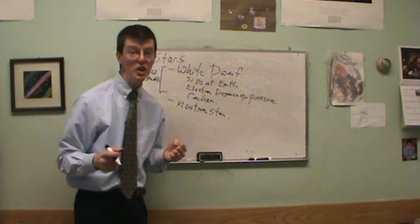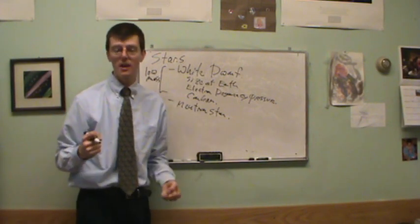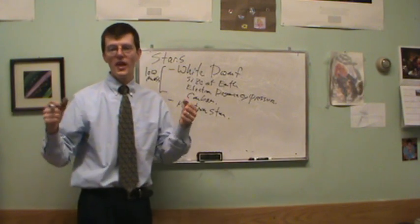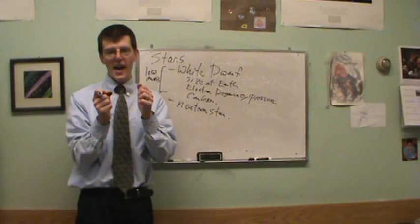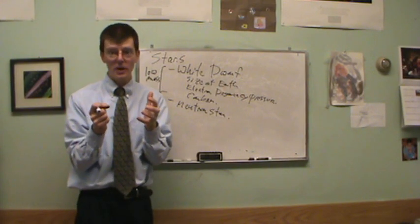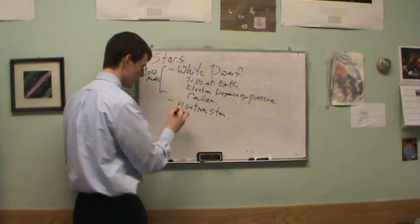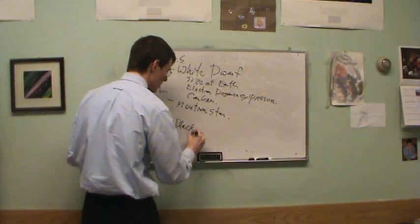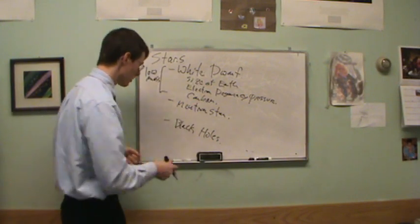If you're a really massive star, the biggest of the big stars, 20 times the mass of the Sun, when that's undergoing a supernova, it's going to collapse so much with so much pressure there that even the pressure of neutrons cannot stop it. That can create a black hole.